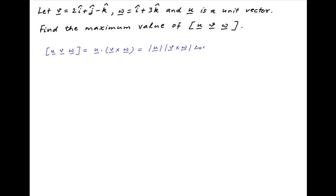This is equal to absolute value of vector u times absolute value of vector v cross w times cos alpha, where alpha is the angle between vectors u and v cross w.